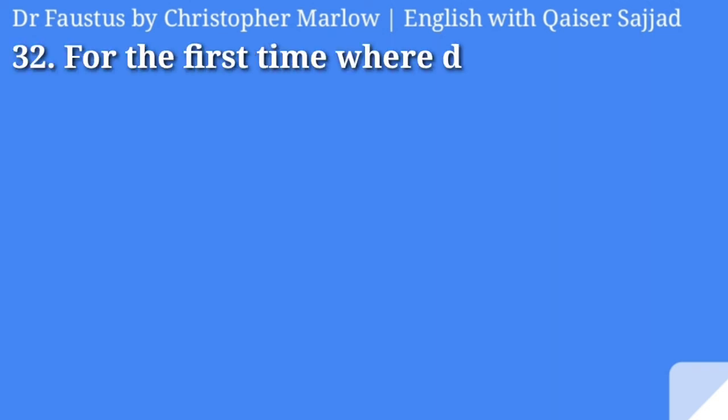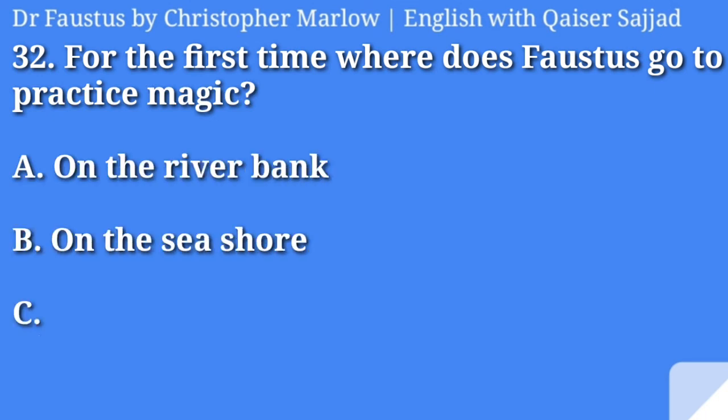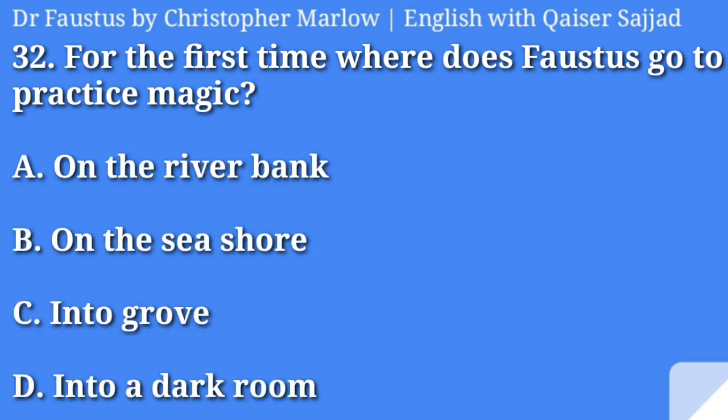For the first time, where does Faustus go to practice magic? On the river bank, on the seashore, into a grove, or into a dark room? Answer is option C, into a grove.